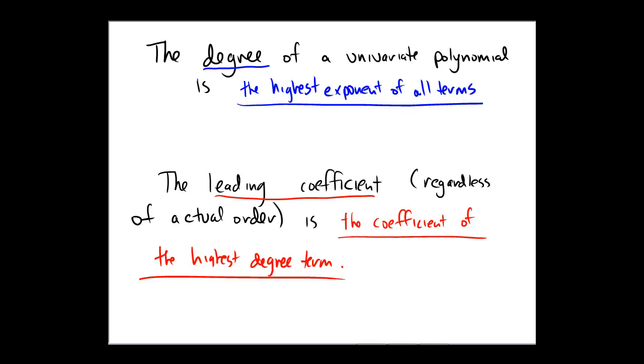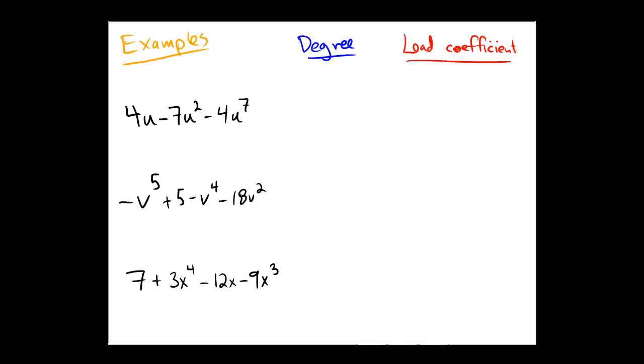So let's try a handful of examples. I have three examples lined up on the left, and let's find the degree of each and the lead coefficient of each. Remember, the degree is the largest exponent that we see in the polynomial.